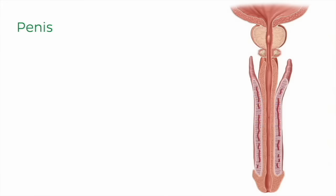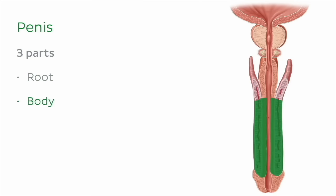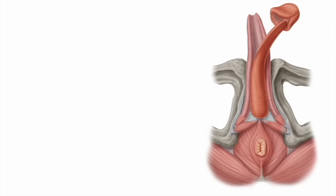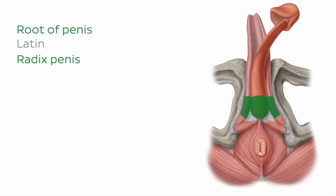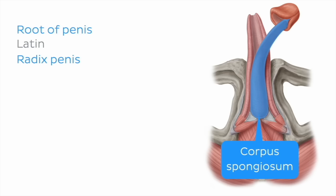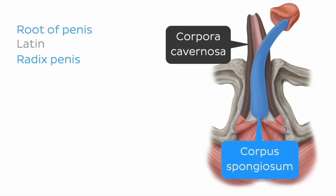The penis is made up of three parts. In this inferior view, we can examine the root of the penis, which consists of the bulb as well as the crura of the penis. The root of the penis is formed by the proximal expansions of two kinds of erectile tissues, the corpus spongiosum and corpora cavernosa.